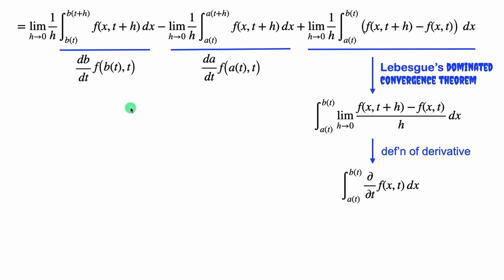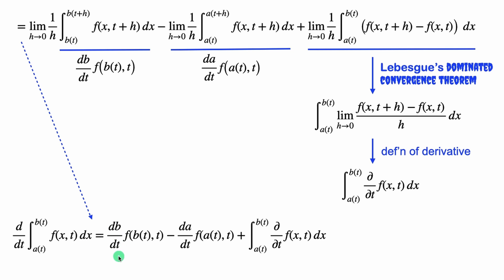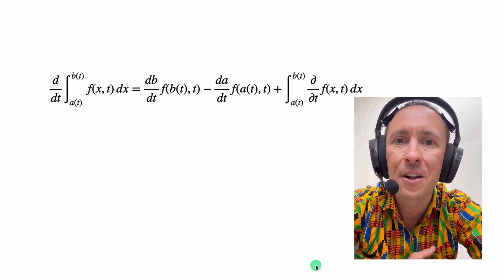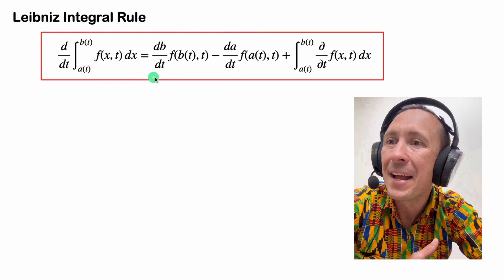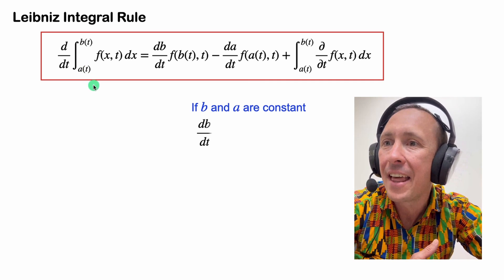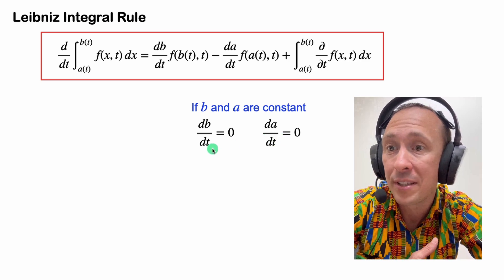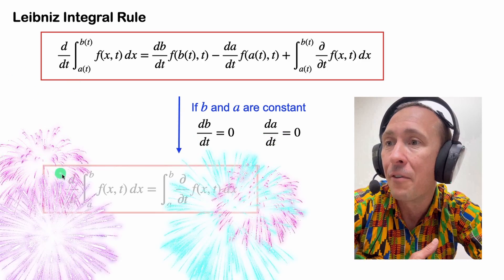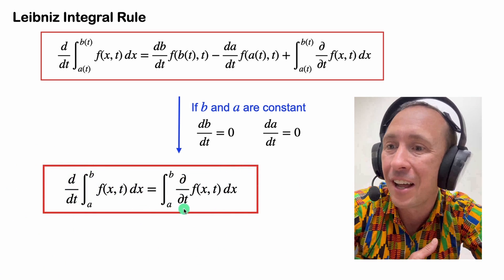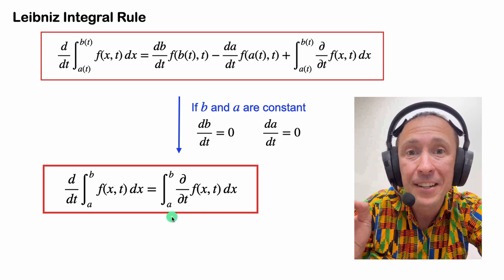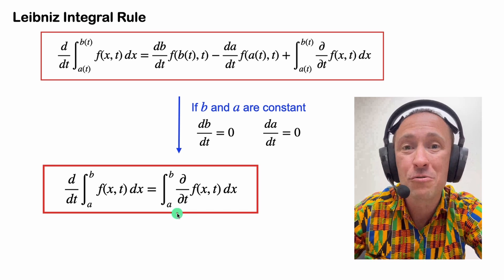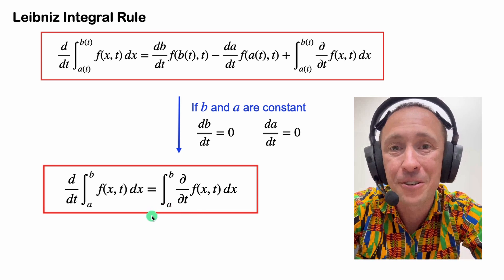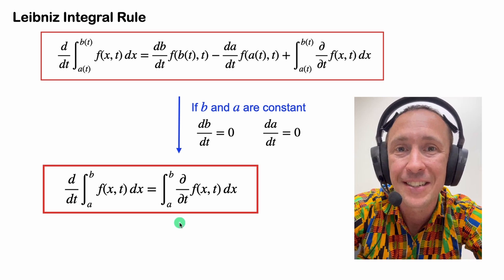Now we've simplified all three terms and can merge them together. This equals the derivative of b with respect to t times f of b of t, t, minus the derivative of a with respect to t times f of a of t, t, plus the integral of the partial derivative with respect to t of f of x, t. This is the Leibniz rule in all its glory. If we assume constant limits of integration, then both a and b don't change with t, so those first two terms are zero, and the derivative of our integral simply becomes the integral of the derivative with respect to t.